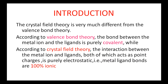Introduction. Crystal Field Theory is very much different from the Valence Bond Theory. According to Valence Bond Theory, the bond between metal ion and ligand is purely covalent — that is, bond formed by the sharing of electrons. But according to Crystal Field Theory, the interaction between metal ion and ligands, both of which act as point charges, is purely electrostatic. That is, the bond between metal and ligand is 100% ionic.